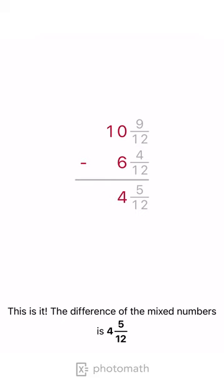This is it. The difference of the mixed numbers is 4 and 5 twelfths.